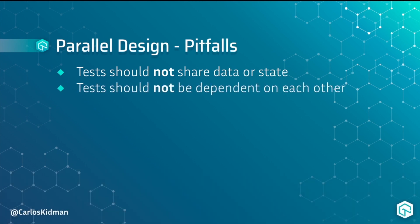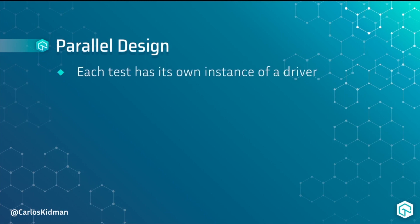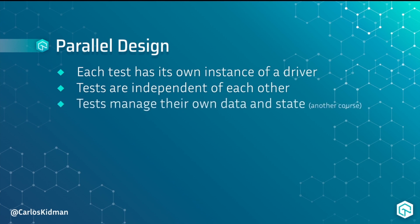Tests should not be dependent on each other. If test B only works after test A is executed, then you have to run them sequentially, which breaks the whole parallel strategy. Instead, here are some pieces of advice that can help you make sure you have parallel design. Each test has its own instance of a driver — this also extends to most objects. Tests should be independent of each other, which is one of the most important pieces of parallel design.